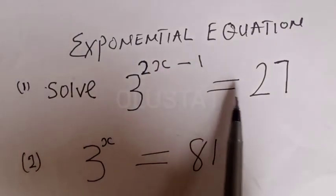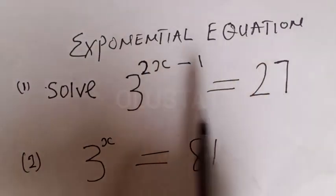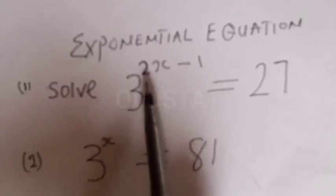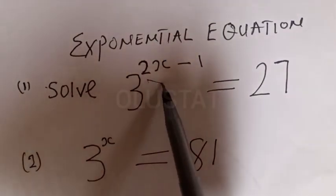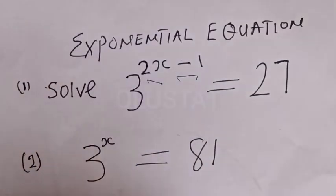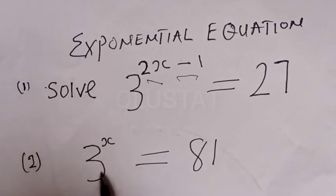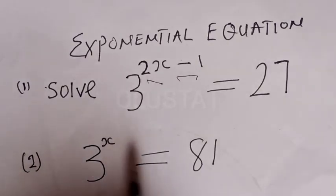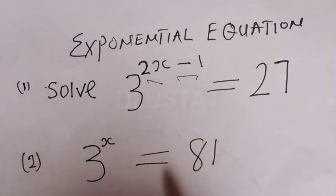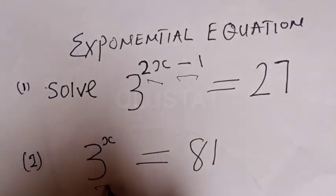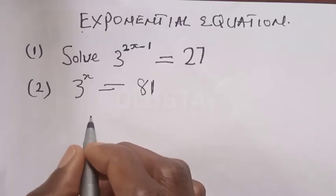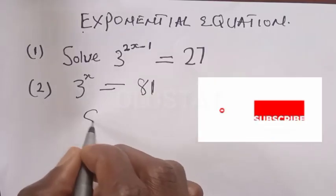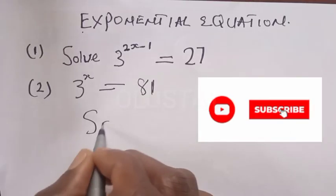This equation is written in exponential form. The second question says 3 raised to power s is equal to 81, and you have to express the solution.